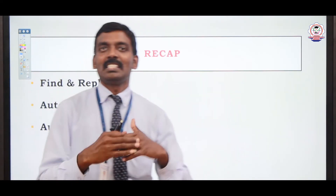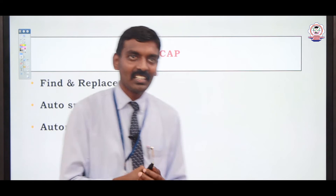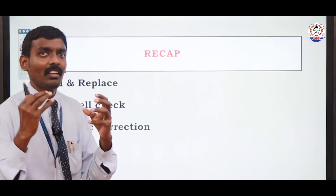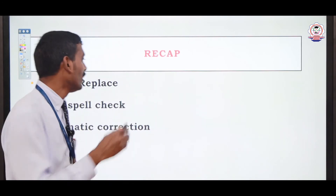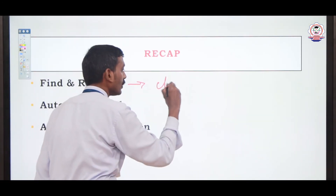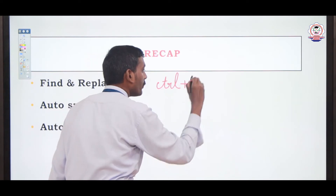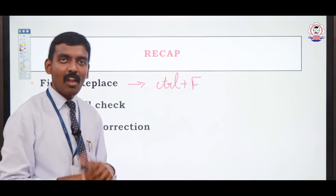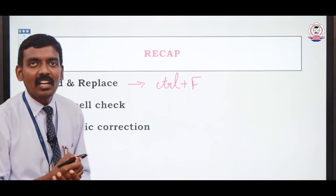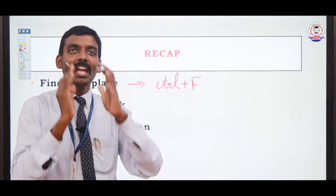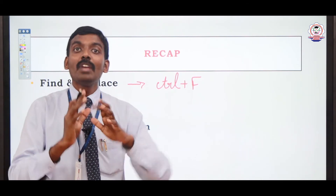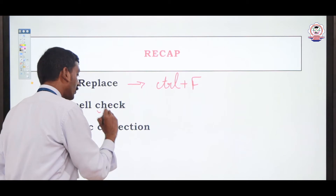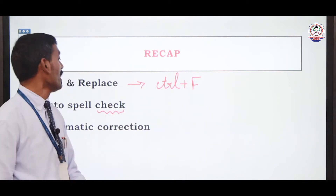Let's see the concepts we discussed in the previous session. What is Find and Replace? The shortcut to open the Find and Replace dialog box is Control plus F. This shortcut is used to open the Find and Replace dialog box. And the Auto Spell Check icon — what is its usage? It is used to find out typographical mistakes. While we type some content, any errors will be identified with the help of a squiggly red line.